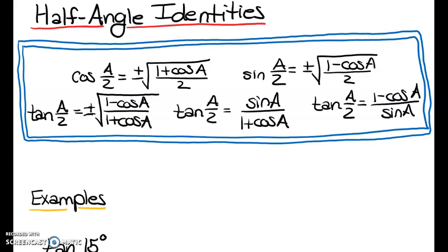This video covers half-angle identities — the last section in chapter 5 we're going to cover. Here are our half-angle identities. If you want to see where they come from, turn to page 232. They basically come from our double-angle identities. You can go over those proofs if you want; I think they walk through one of them for you, but I'm sure you could figure the rest out afterwards.